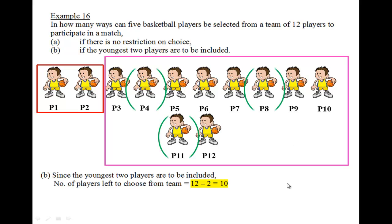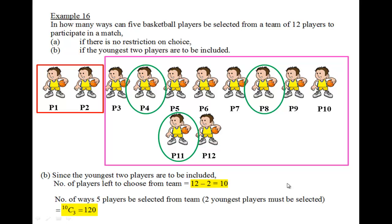The three can be any three, and therefore the number of ways the five players can be selected to form the team with the two youngest players included would be 10 choose 3.